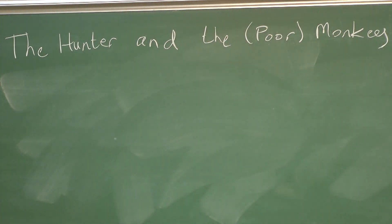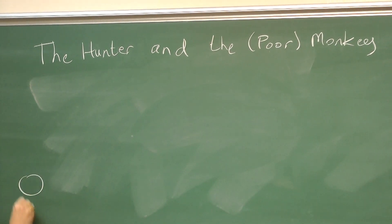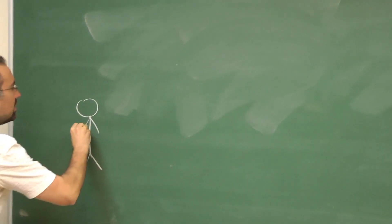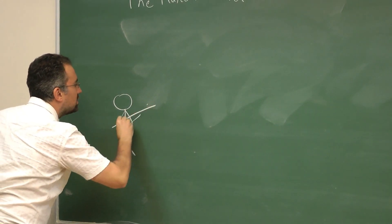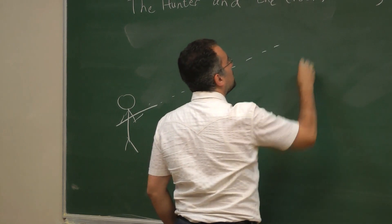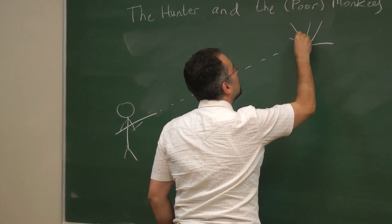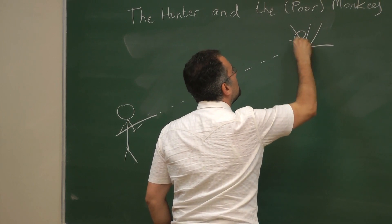Now the story is we have a hunter who is trying to hunt a monkey. He's standing over here with his rifle in his hand pointed directly at a monkey who is at the top of a tree.